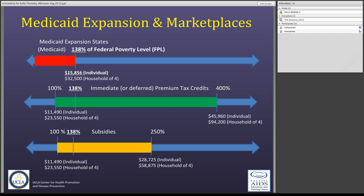If you're going to remember one slide from this presentation, remember this one. In Medicaid-expanding states, if you make less than 138% of the federal poverty level — $15,856 for an individual or $32,500 for a household of four — you're going to get Medicaid. In all states where exchanges exist, if you're between 100% and 400% of the federal poverty level, you qualify for immediate or deferred premium tax credits — federal assistance with your monthly premium. You can take that help right away with a reduced monthly payment, or defer it until you file taxes. This is based on your projected income for 2014.